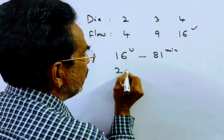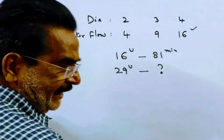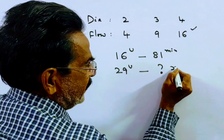So if 29 units of water is flowing, how many minutes will it take? So, say friends, say x minutes.